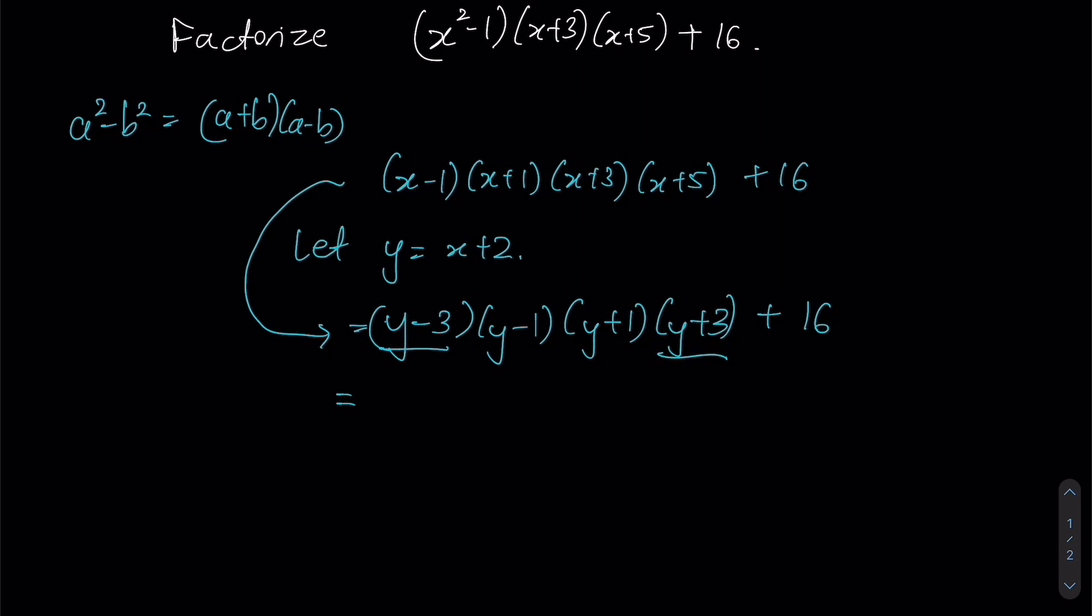We can achieve y² - 3². Let's write that down first, and the same applies for (y - 1)(y + 1) to get (y² - 1²) + 16. Now let's evaluate what we have: (y² - 9)(y² - 1) + 16.